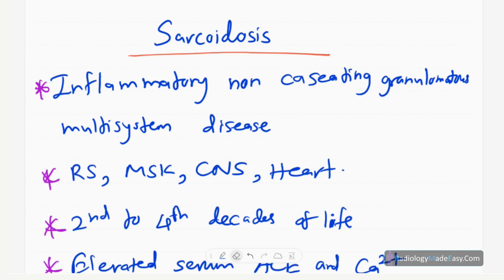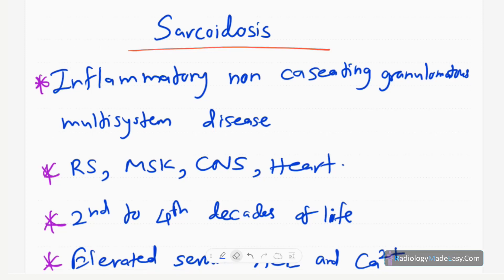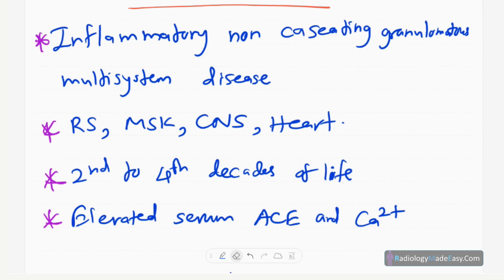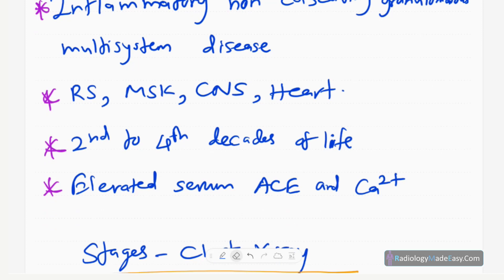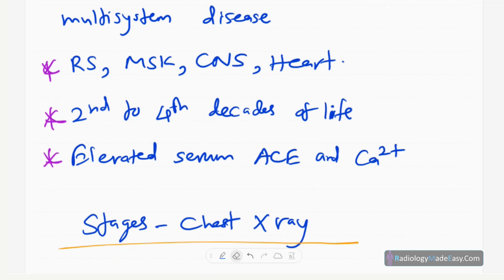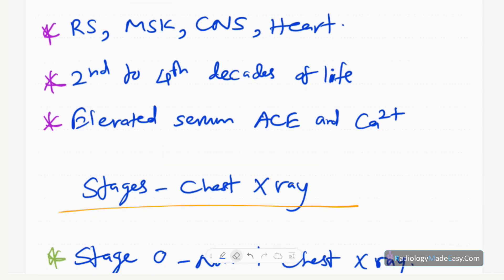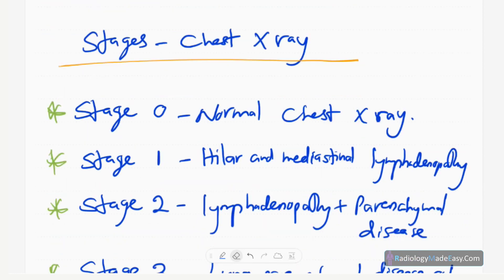Sarcoidosis is an inflammatory, non-caseating granulomatous multi-system disease. It can affect mainly the respiratory system, CNS, MSK, and heart. It is common in the second to fourth decades of life. You can diagnose the disease by identifying elevated serum angiotensin-converting enzyme (ACE) levels or serum calcium levels, which will be elevated in sarcoidosis. According to chest X-rays, we can stage the disease.